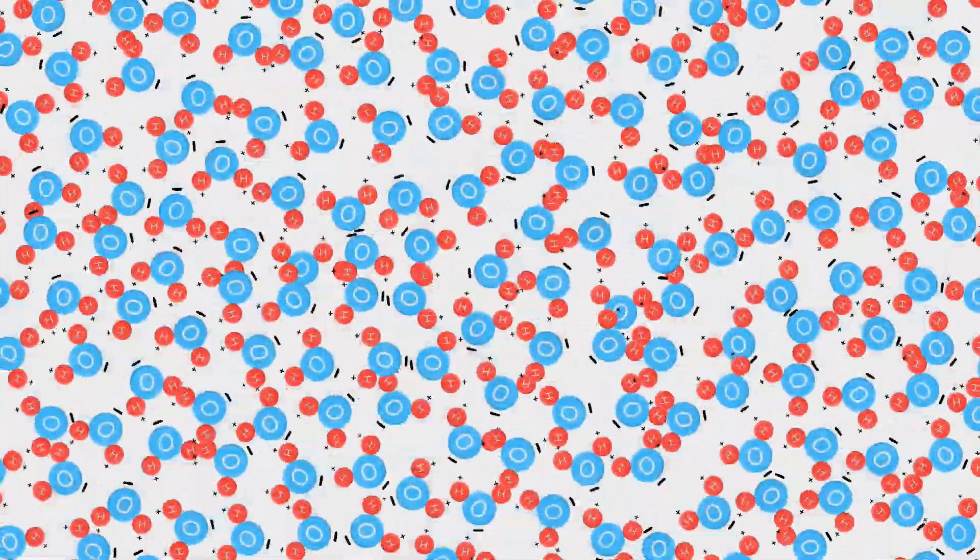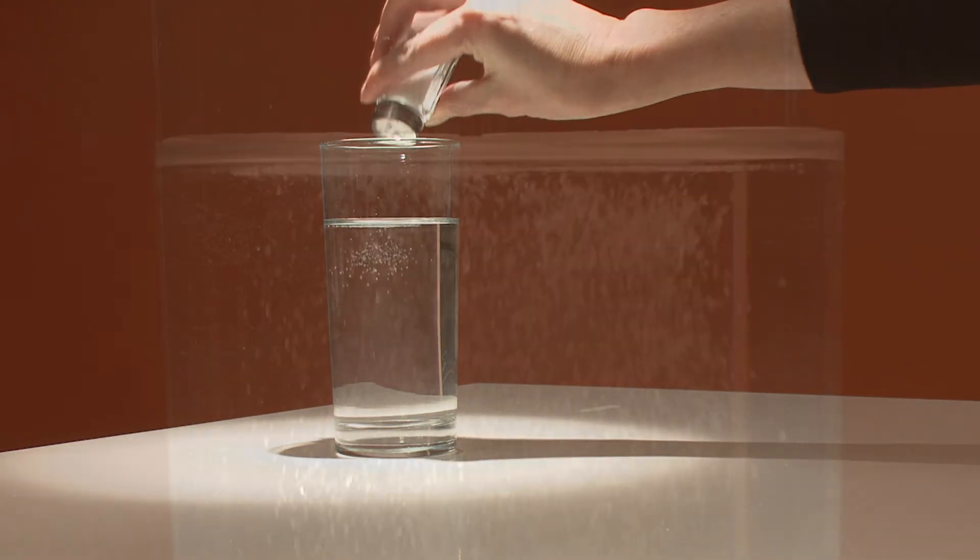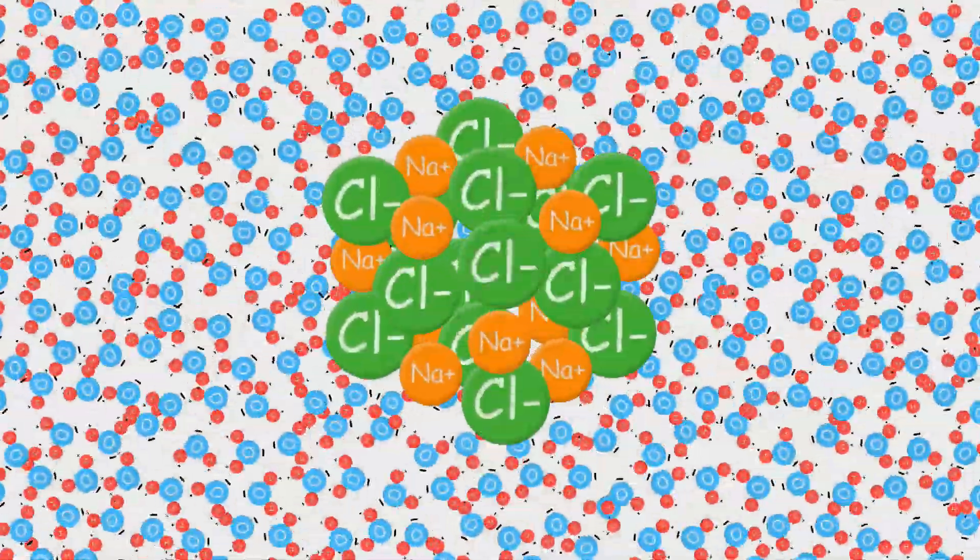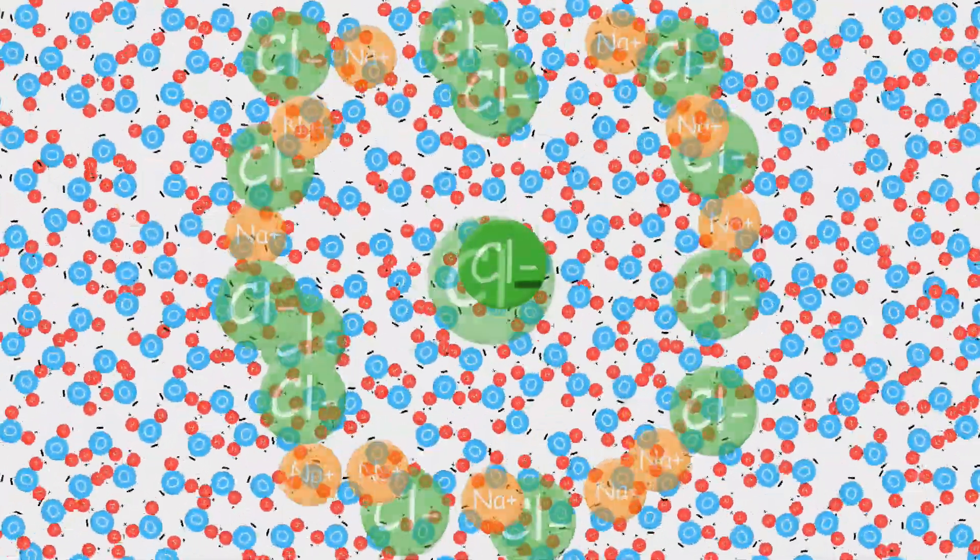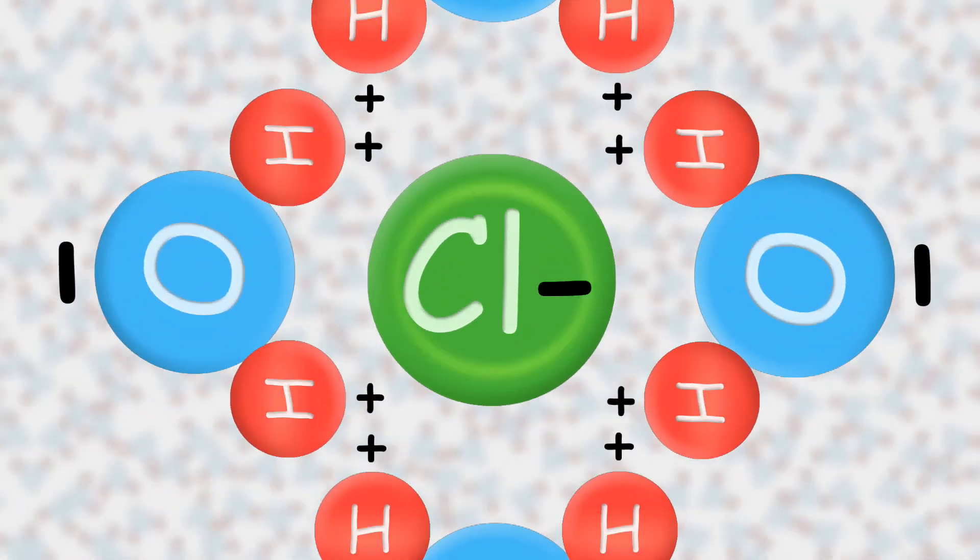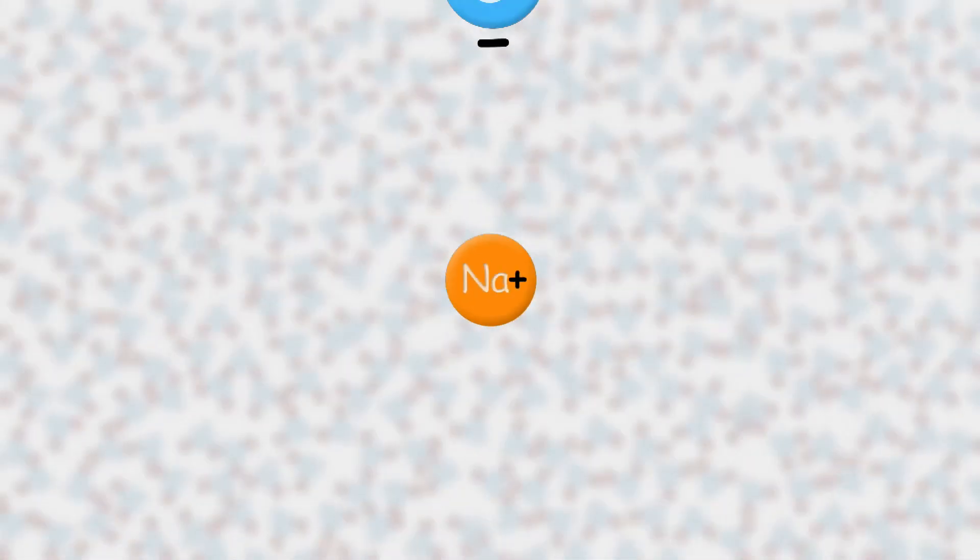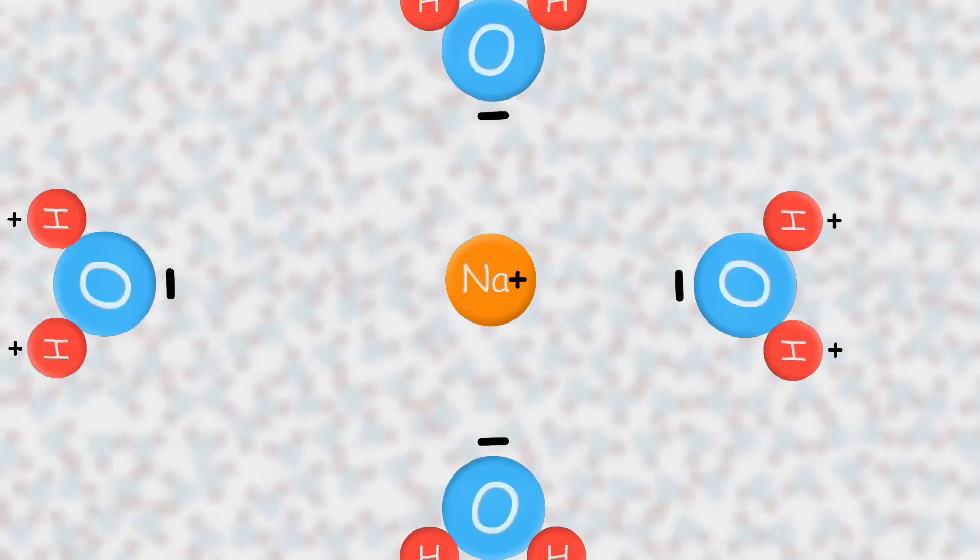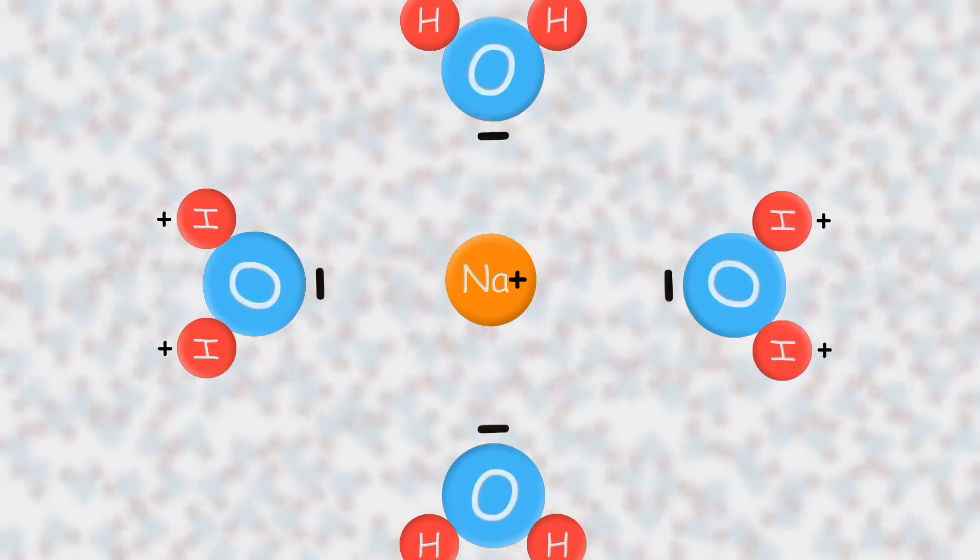All the negative sides of the molecules in a substance being dissolved, for example table salt, are surrounded and isolated by a mass of H2O molecules with their positive sides showing.